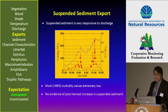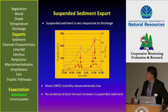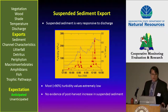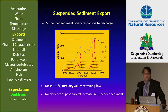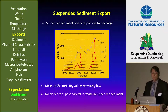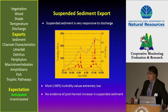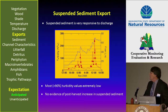The next set of variables is exports, which included suspended sediment. One of the striking things in this study is that suspended sediment was very responsive to discharge. In this graphic, the suspended sediment response is in red with the red dots, and the flow is basically the blue line. Most of the turbidity values — which was how suspended sediment was evaluated — were extremely low. The vast majority, over 90 percent, and we found no evidence of a post-harvest increase in suspended sediment.